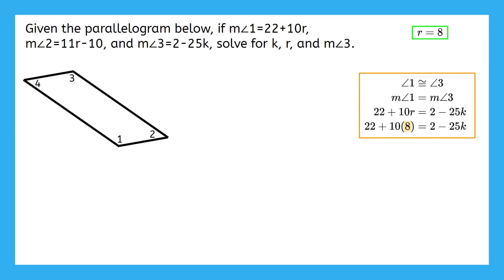Now that I've substituted 8 for R, let me simplify as much as possible. This leaves me with 102 equals 2 minus 25K. Now this equation is completely solvable. I could just subtract 2 on both sides, and then divide both sides by negative 25. Now I have my answer that negative 4 equals K. We've now solved for both of our variables. Let's check. Are we done with this problem?